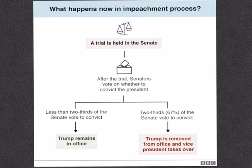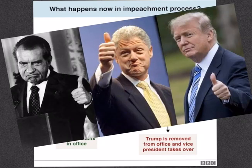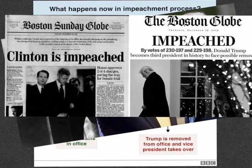A two-thirds majority vote is required in the 100-member Senate to convict and remove a president from office. The US Senate is made up of 53 Republicans, 45 Democrats, and 2 Independents. At least 67 votes are required against Trump in the Senate, which is highly unlikely. A trial in the Republican-controlled Senate is expected in January. Looking at history, other than Trump, only two other US presidents have ever been successfully impeached, and in neither instance was the president removed from office.